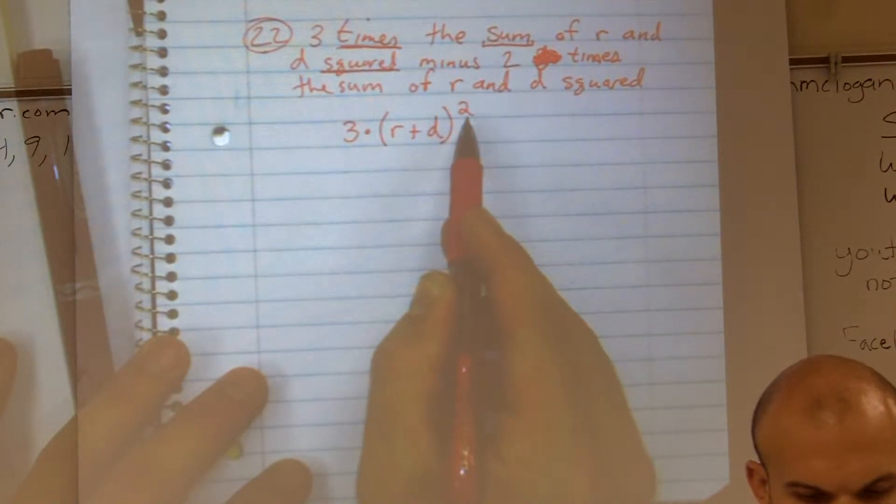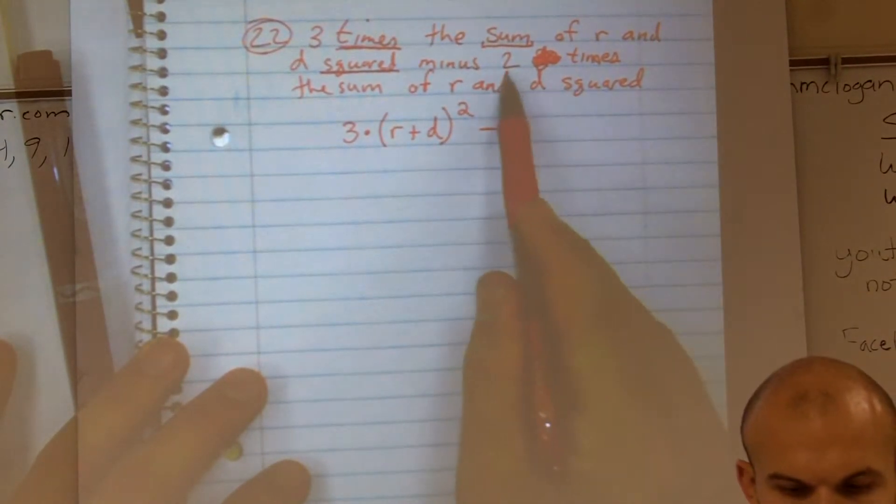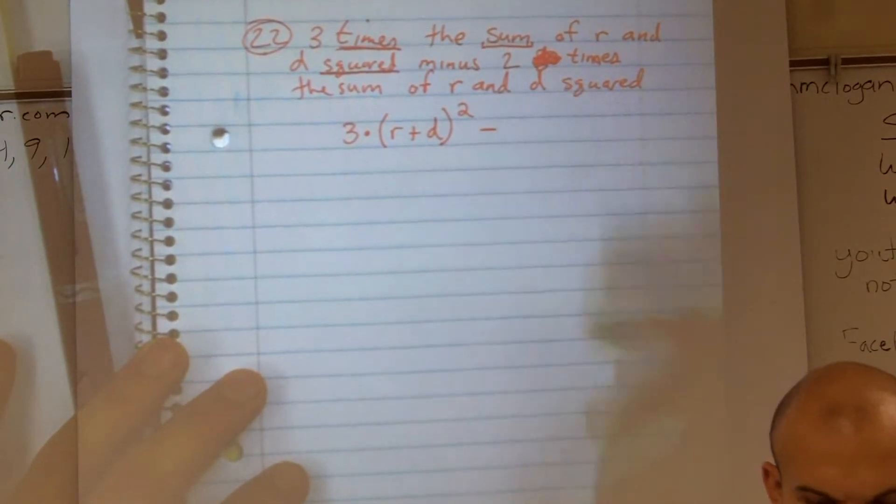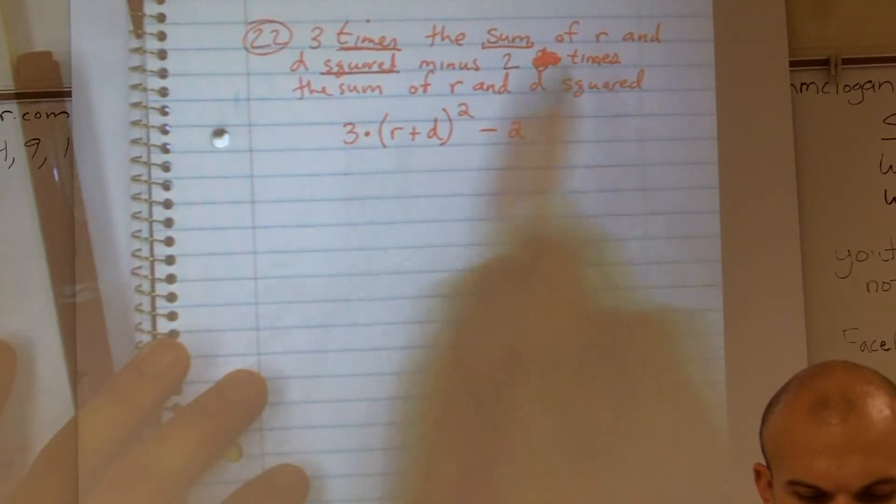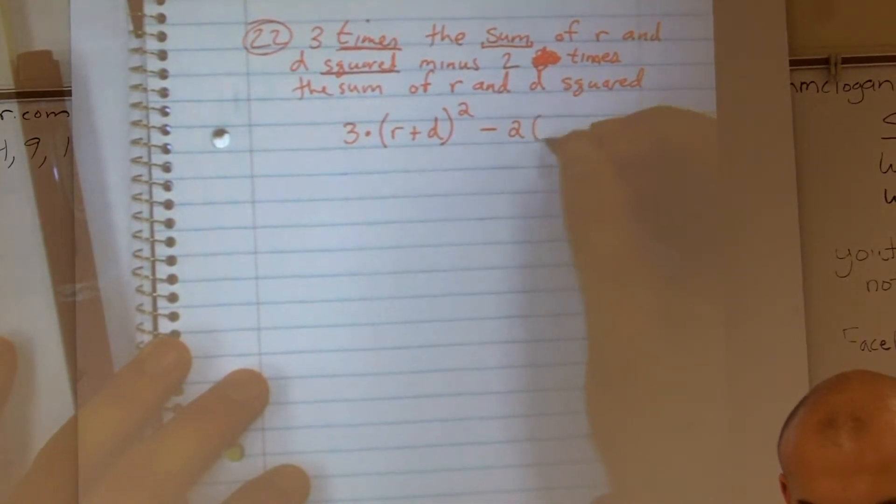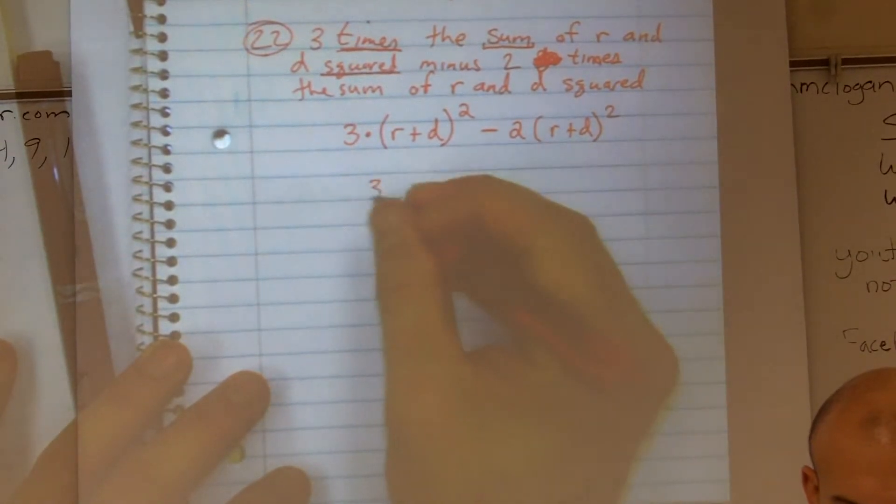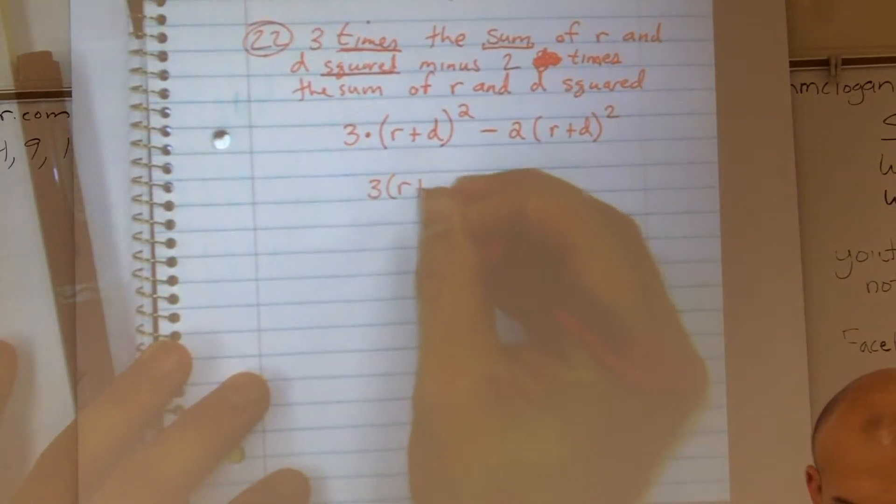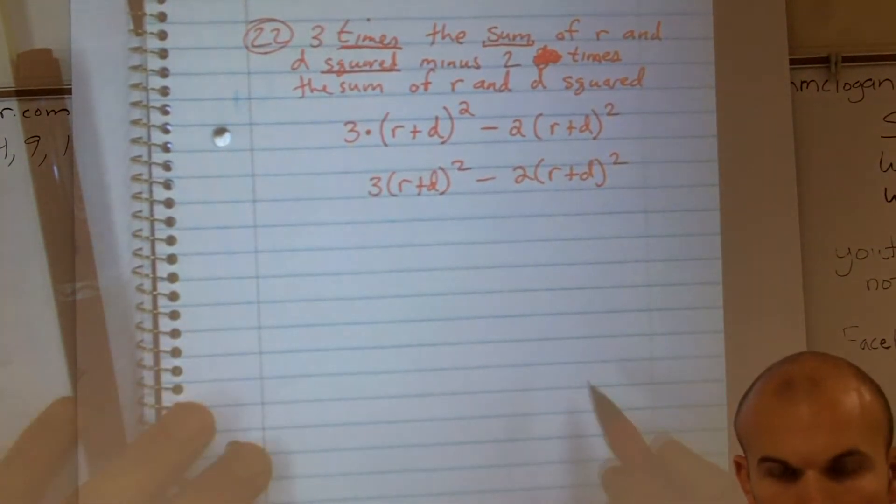Right? Then it says minus two times, so I'm going to multiply by two, minus two times the sum of R and D squared. So really my problem looks like this. R, because I don't need to write the multiplication symbol. Okay?